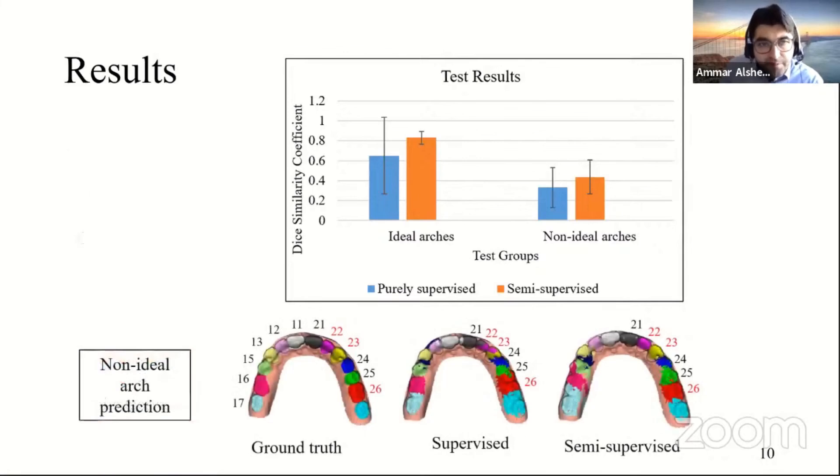Here is another example of an ideal arch where we can see for teeth 22, 23, and 26, the purely supervised training provides mixed labels, incorrect labels for these three particular teeth. But when we add the self-supervised loss, the labeling of teeth 22, 23, and 26 is more closer to the ground truth.